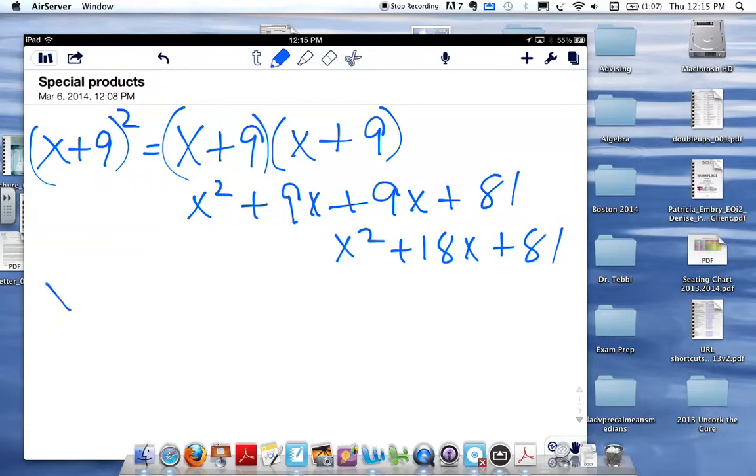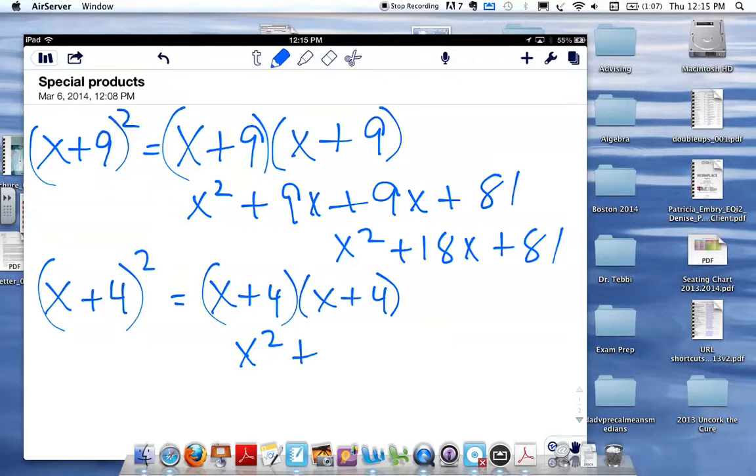Let's look at another one, x plus 4 quantity squared. Remember, that's x plus 4 times x plus 4, and that's going to be x squared plus inner plus outer plus last, which is x squared plus 8x plus 16.